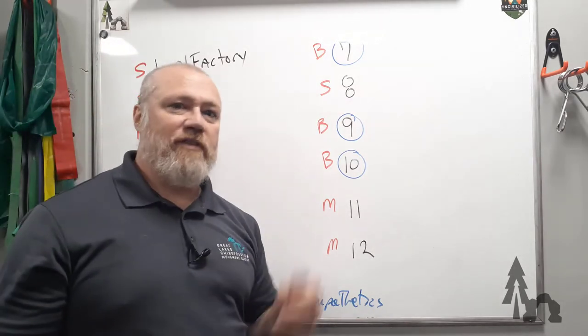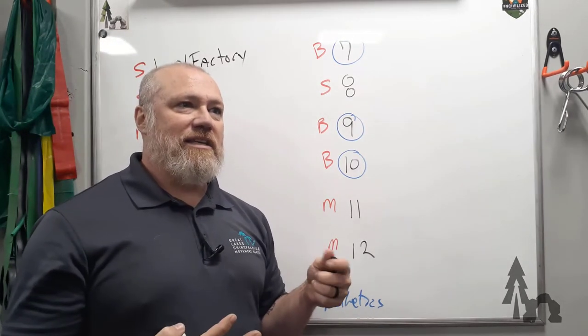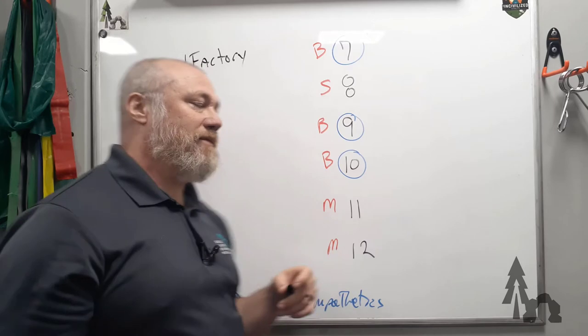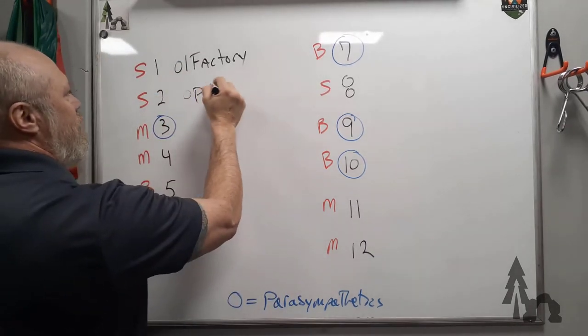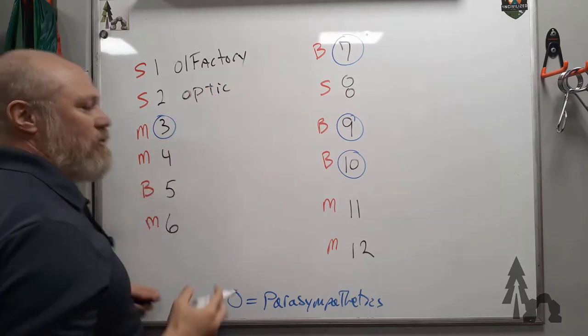The first one is the olfactory nerve. The olfactory nerve is sensory—it's going to be the sense of smell. Number two is your optic nerve. We've mentioned the optic nerve already; that's going to be vision, coming from the back of your eyeball.